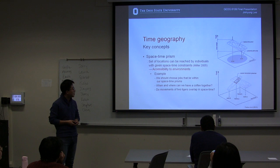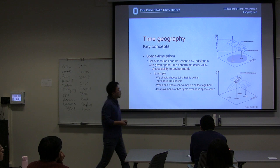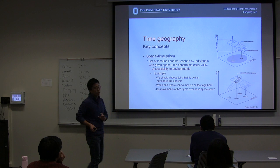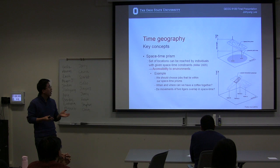We can also understand our social interaction potential using the space-time prism concept — for example, when and where can we have coffee together? Let's say this is person A's space-time prism, and this one is person B's space-time prism. Only they can meet within the intersection part. We can also apply this Time Geography concept, especially the space-time prism, to animal movements.